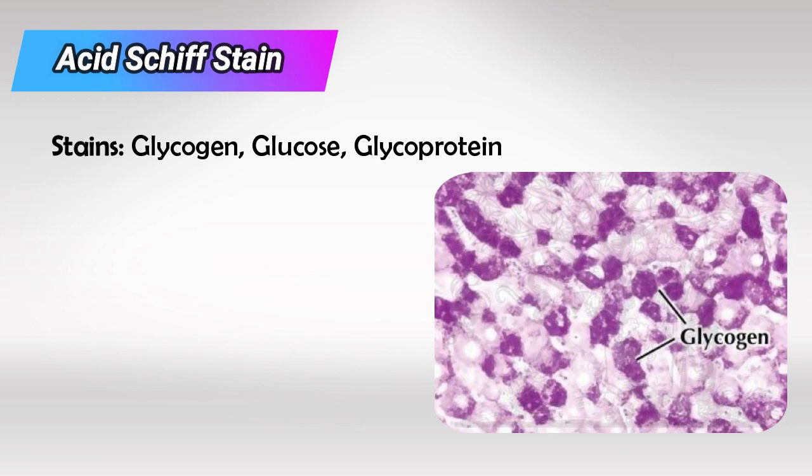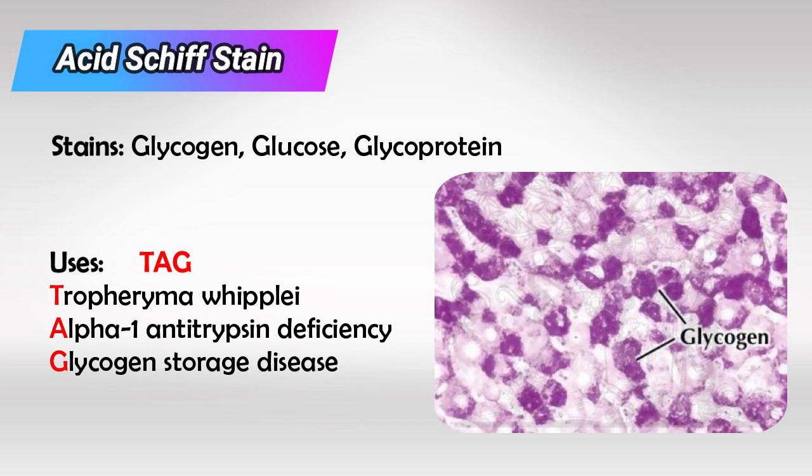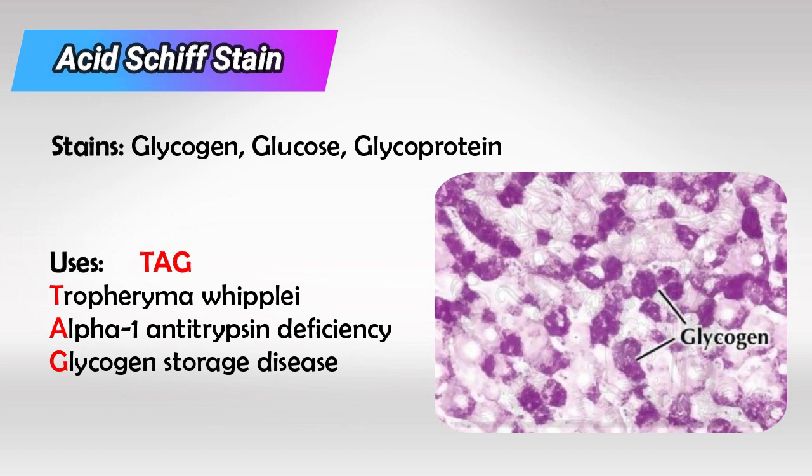PAS (Periodic Acid-Schiff) stain stains glucose, glycogen, and glycoprotein. To memorize the uses, remember the word TAG: Tropheryma whipplei, Alpha-1-antitrypsin deficiency, and Glycogen storage disorders. Tropheryma whipplei contains a lot of glucose, which is why it's stained. In alpha-1-antitrypsin deficiency, the protein accumulates inside the cell and its main component is glycoprotein. In glycogen storage disorders, a lot of glycogen accumulates inside the cell.